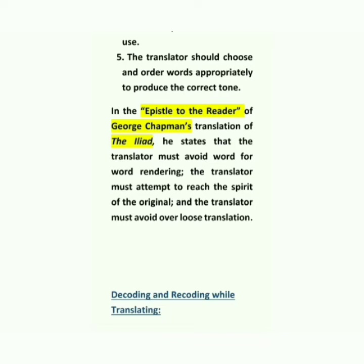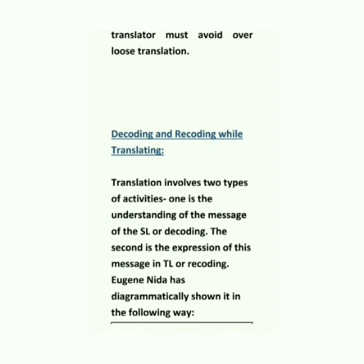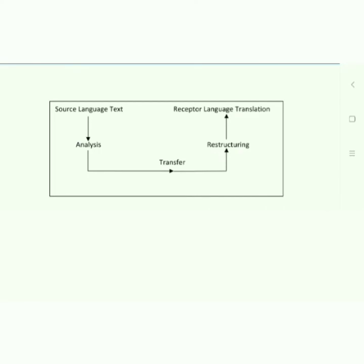In the epistle to the reader of George Chapman's translation of the Iliad, he states that the translator must avoid word-for-word renderings, the translator must attempt to reach the spirit of the original, and the translator must avoid overloaded translation. The most important point is decoding and re-coding while translating. Translation involves two types of activities: one is the understanding of the message of the SL or decoding, and the second is the expression of this message in TL or re-coding. Eugene Nida has diagrammatically shown this: first we take the source language text, then we analyze it, then we transfer it, and then we restructure the word into the target language.